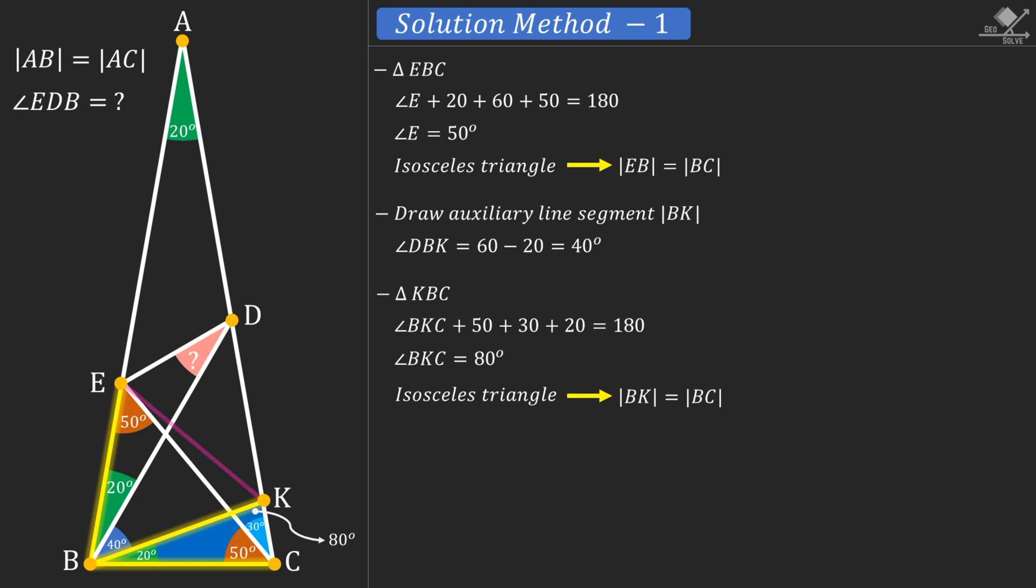Now let's connect point E and K and focus on triangle EBK. Notice that it has a 60-degree vertex angle and equal legs EB and BK. That means this is an equilateral triangle. So all three internal angles are 60 degrees and all three sides are equal in length.